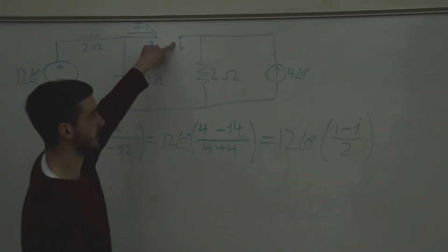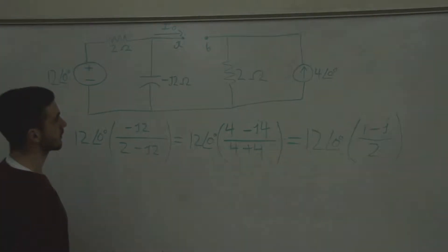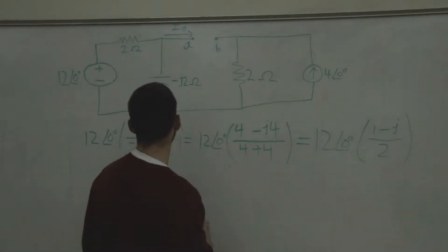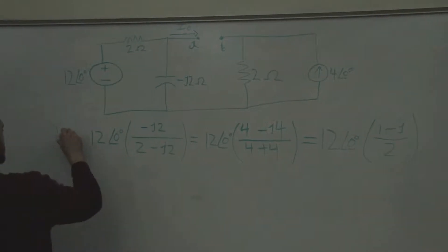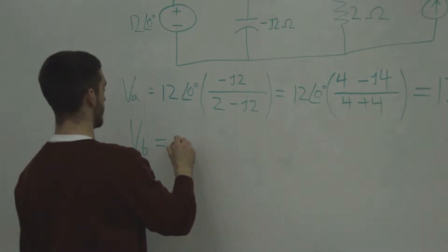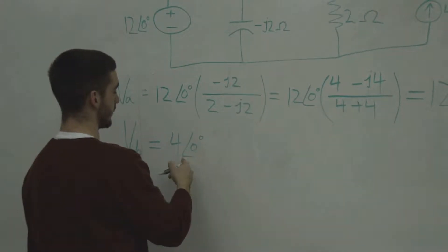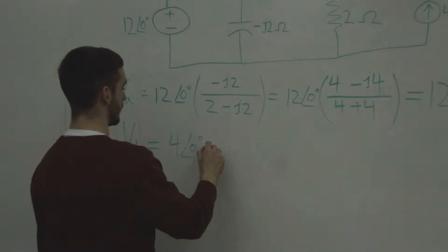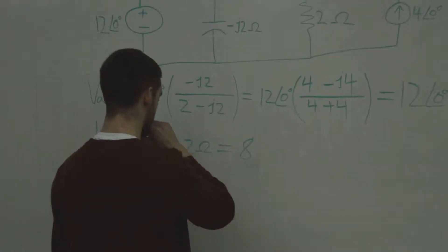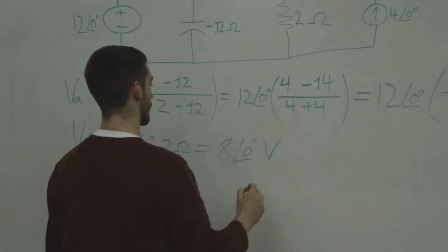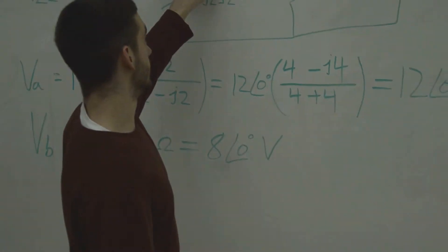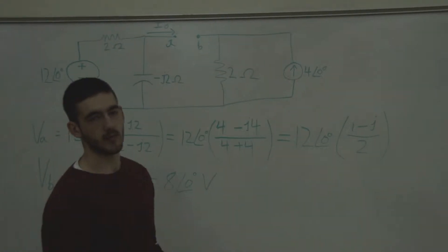Now we'll find the voltage here at the node B. So that's just Ohm's law, V equals I times R. We have VB equals 4 with a phase shift of zero amps, times 2 Ohms equals 8 with a phase shift of zero volts. So now what we need to do is find the voltage between node A and node B, so we'll take VA minus VB.